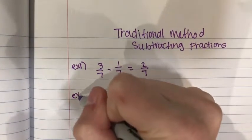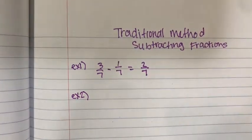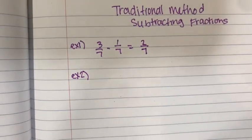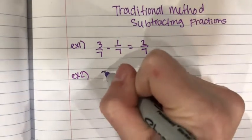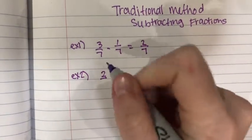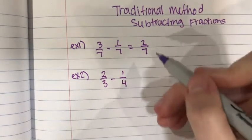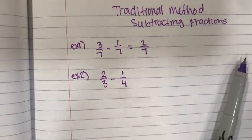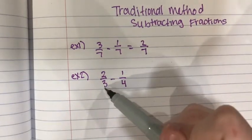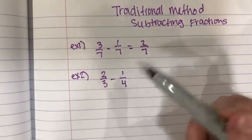Now the next three examples that I am going to be doing, the denominators are not equivalent so you will see what you have to do. So the next example we are going to do is 2/3 minus 1/4. You are going to multiply this denominator by the top and bottom of this fraction.